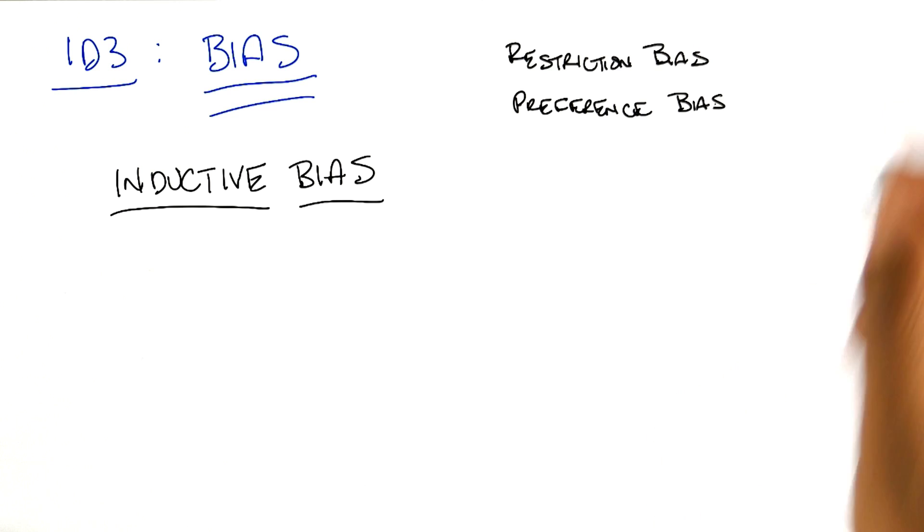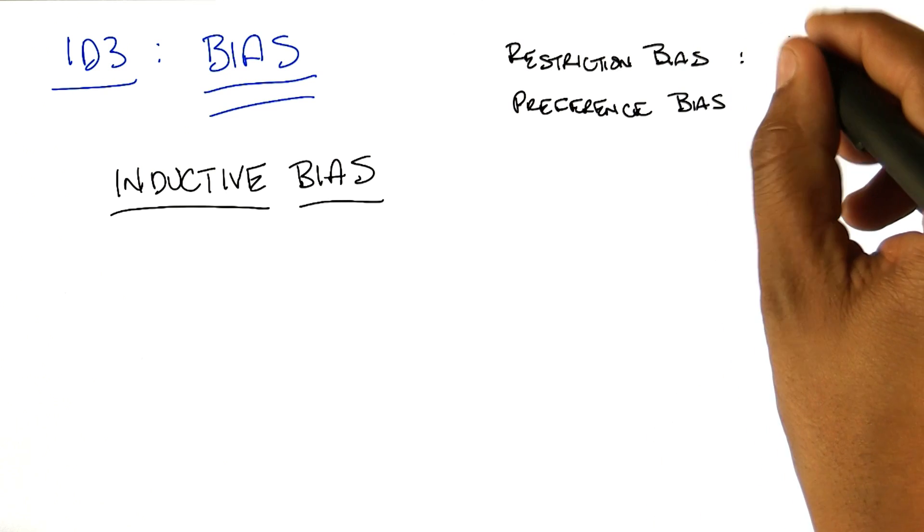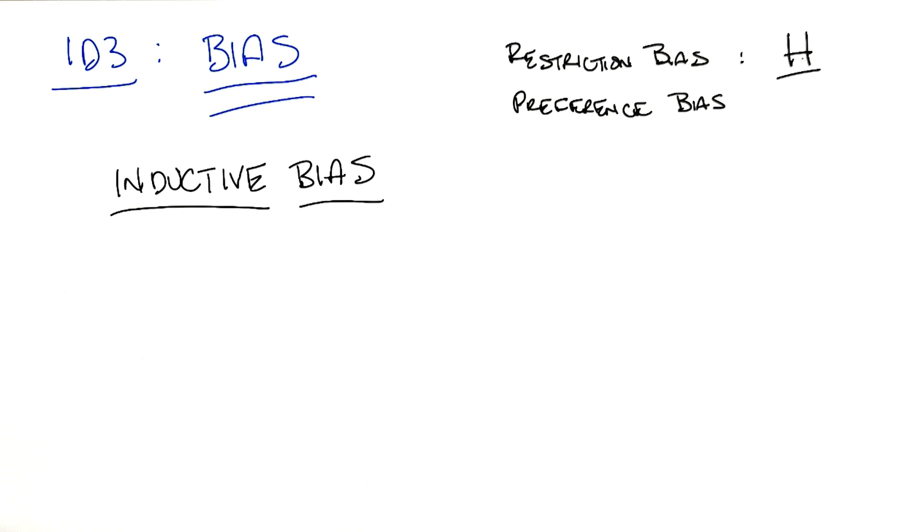So, a restriction bias is nothing more than the hypothesis set that you actually care about. So in this case, with decision trees, the hypothesis set is all possible decision trees.